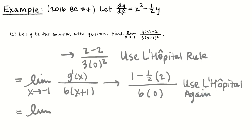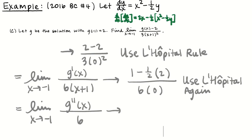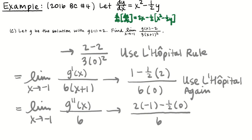Applying L'Hôpital's rule again, I get the limit as x approaches −1 of g″(x) divided by 6. Pulling in the second derivative: that's 2x minus 1/2 times dy/dx. At x equals −1, that's 2(−1) minus 1/2 of 0 — because I know dy/dx is 0 there — which is −2. So the limit equals −2 divided by 6. For free response that's a safe place to stop, though you could simplify it to −1/3.